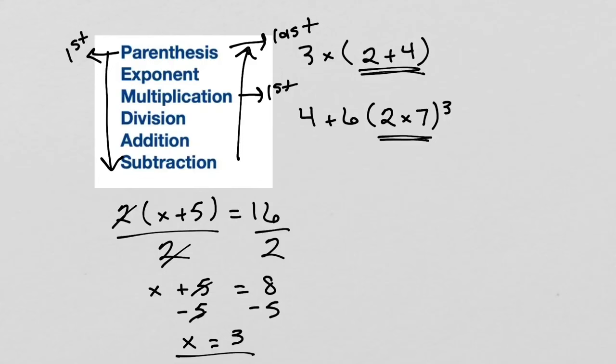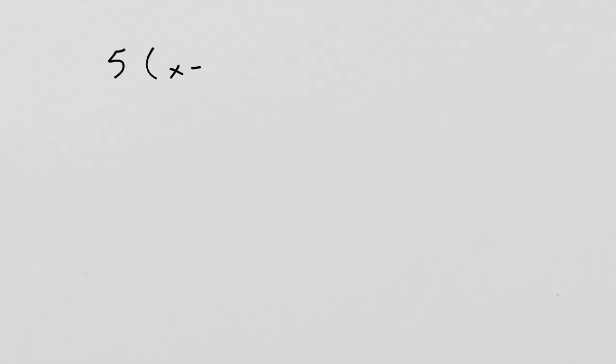You will realize that here we did only 2 steps, therefore this is a true 2-step equation. Try this question: 5 times parentheses x minus 7 equals 55. Solve for x. Pause the video and try it first.